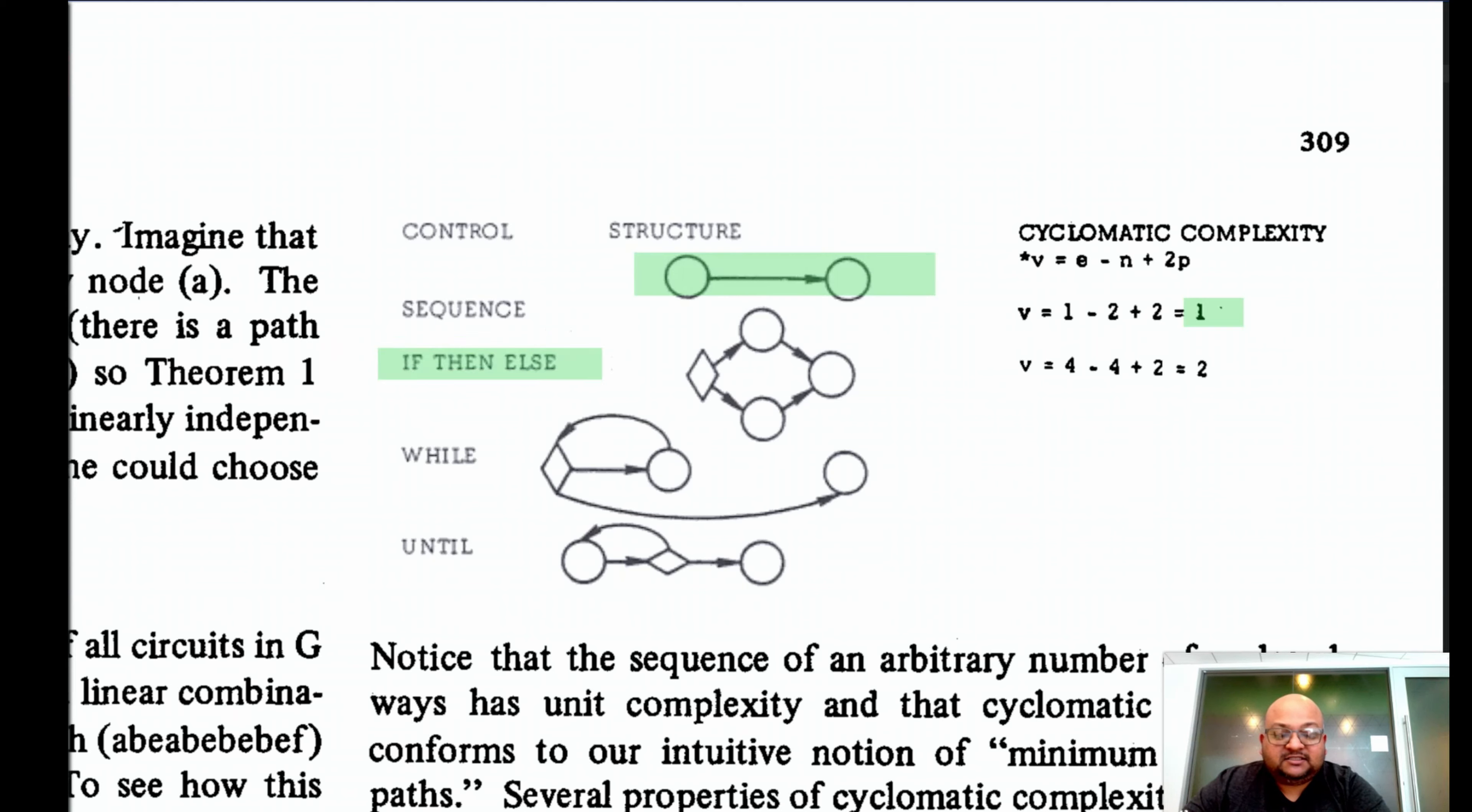If you look at an if-then-else construct, this top node is the if condition on which you're branching. One of these is the then branch. The other one is the else branch. And this is the code following the if statement. The cyclomatic complexity of an if-then-clause is two.